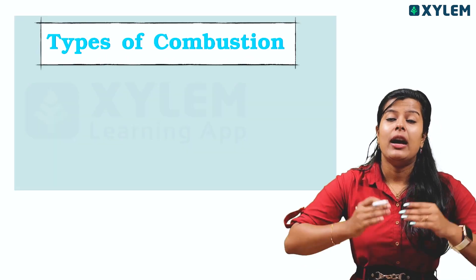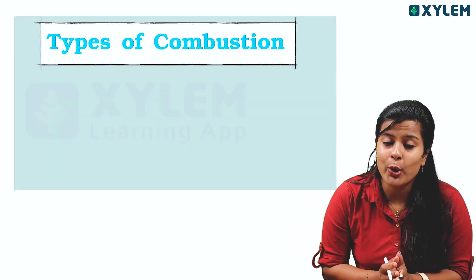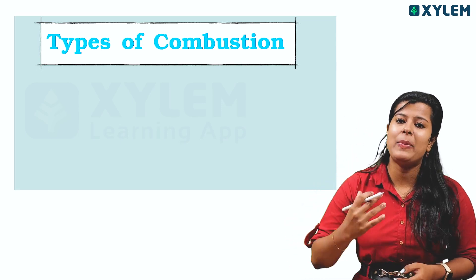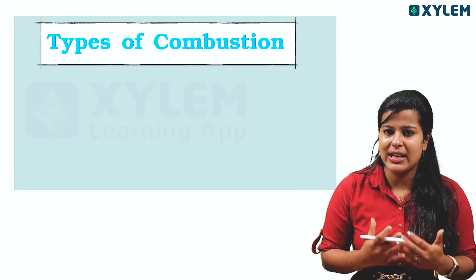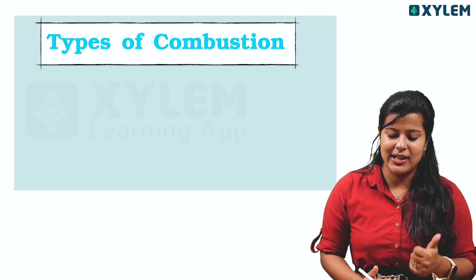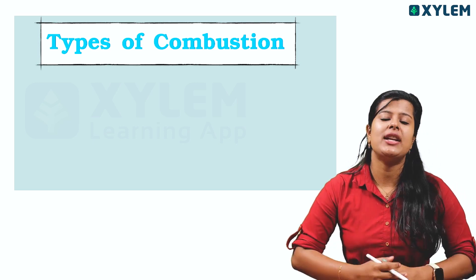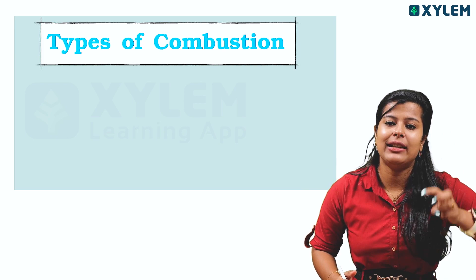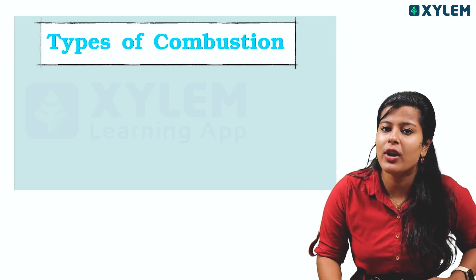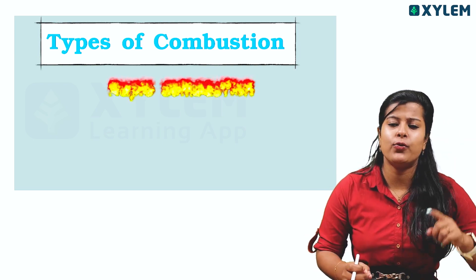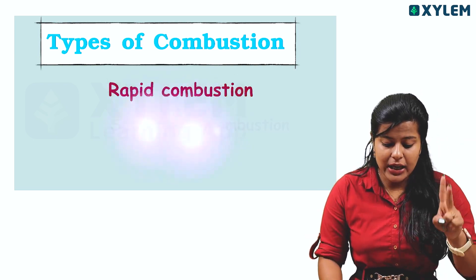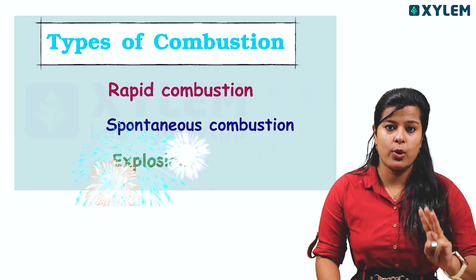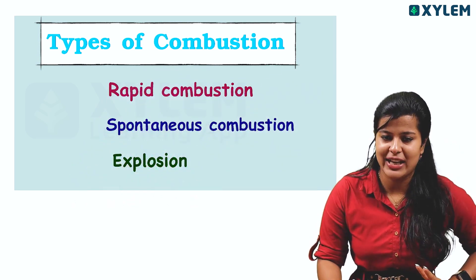This is very important. In this chapter we have important exam content. The next question is: types of combustion. In this topic, there are three types of combustion. First one: rapid combustion. Second one: spontaneous combustion. And third one: explosion. Very, very important.